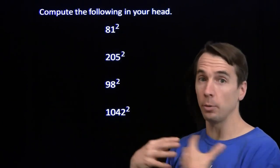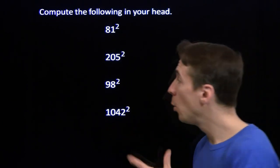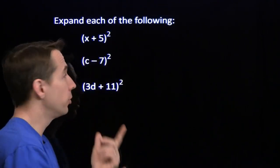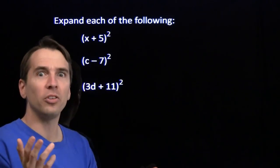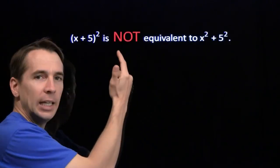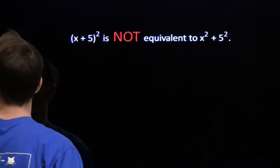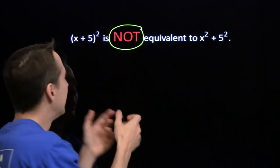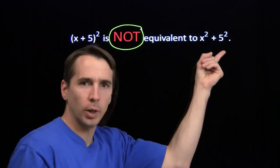I'm going to walk you through what we're doing here, and then you can help me out on the last one. What we're doing here is we're squaring binomials. When you first look at that, you're going to think x squared plus 5 squared equals x squared plus 25. If you learn only one thing from this video, I want you to learn this: the square of x plus 5 is NOT x squared plus 5 squared.